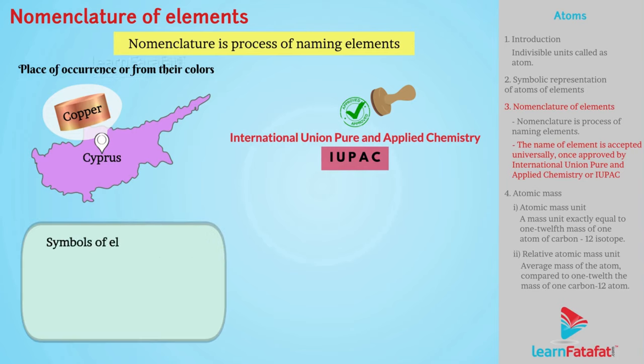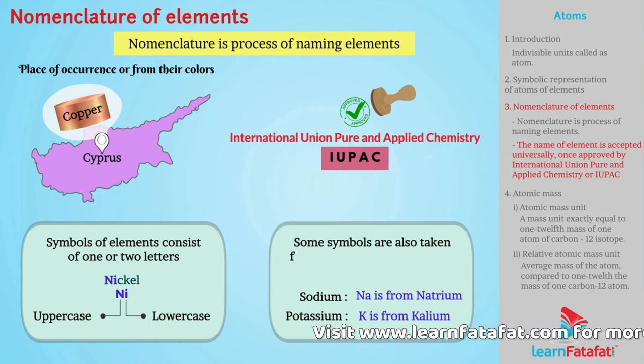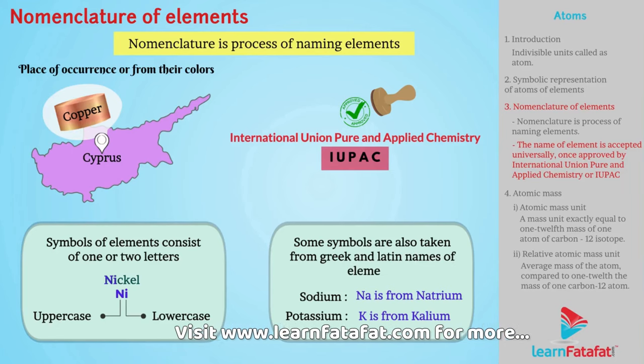The symbols of elements consist of one or two letters. The first letter is always in uppercase and second is always in lowercase. Some symbols are also taken from Greek and Latin names of elements.